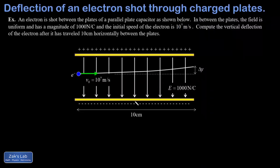In this example we have an electron shot between the plates of a parallel plate capacitor. My upper plate is charged positively, my lower plate is charged negatively, and that means the electric field points downward in between these two plates.